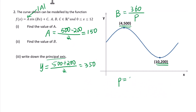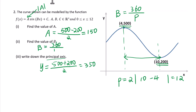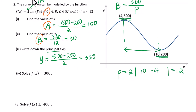The period equals double the horizontal distance between maximum and minimum points, giving period equals 12. So b equals 360 over 12 equals 30. We have now found a and b. The value of c is the midline, so c equals 350.